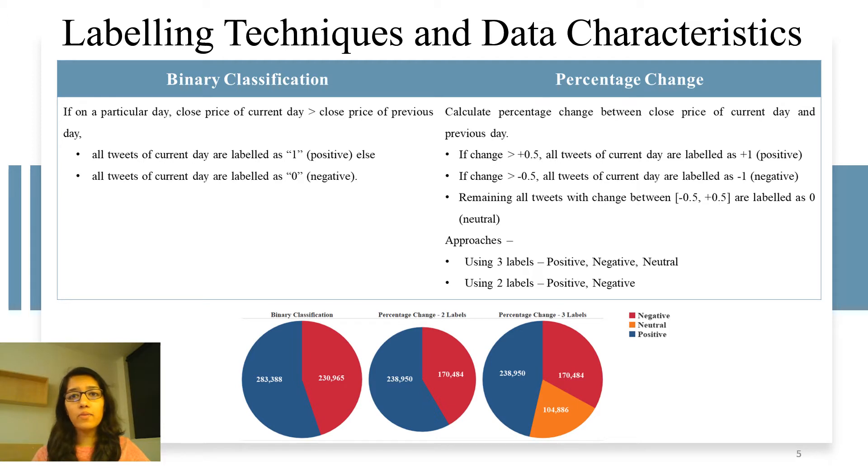For the percentage change labeling technique the percentage change is calculated between the close price of the day the tweet was posted and the close price of the previous day. If this change is more positive and more than 0.5, the tweets of the day are labeled as positive. If this change is negative and more than 0.5, the tweets of the day are labeled as negative. And if the change is between this range, i.e. between negative 0.5 and positive 0.5, the tweets of the day are labeled as neutral. We have used this technique to further divide our labeling approaches where we consider all the three labels in the first sub-approach and then only the positive and negative labels in the second sub-approach.